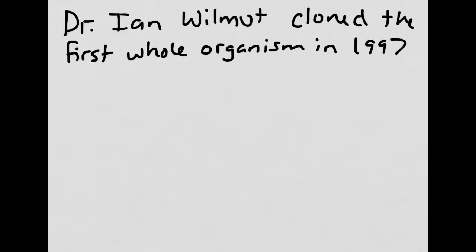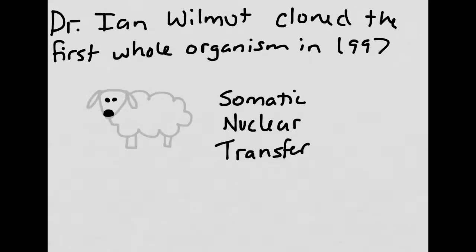Dr. Ian Wilmot cloned the first whole organism in 1997. The first organism that they cloned was actually a sheep, through the process called somatic nuclear transfer.